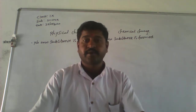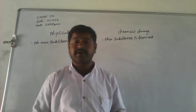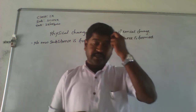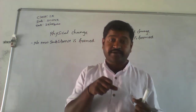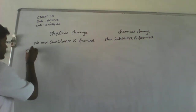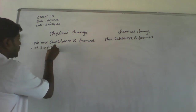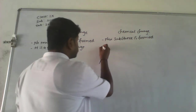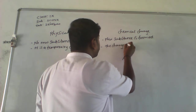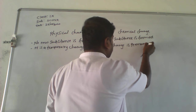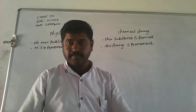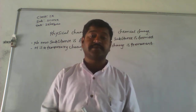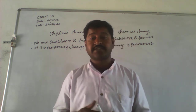If we take the torn paper, we can paste it and get back the same paper. But once we prepare tea, we cannot get back the sugar and milk from it. Therefore, physical change is a temporary change, whereas chemical change is a permanent change. Physical change is reversible in nature, whereas chemical change is irreversible.